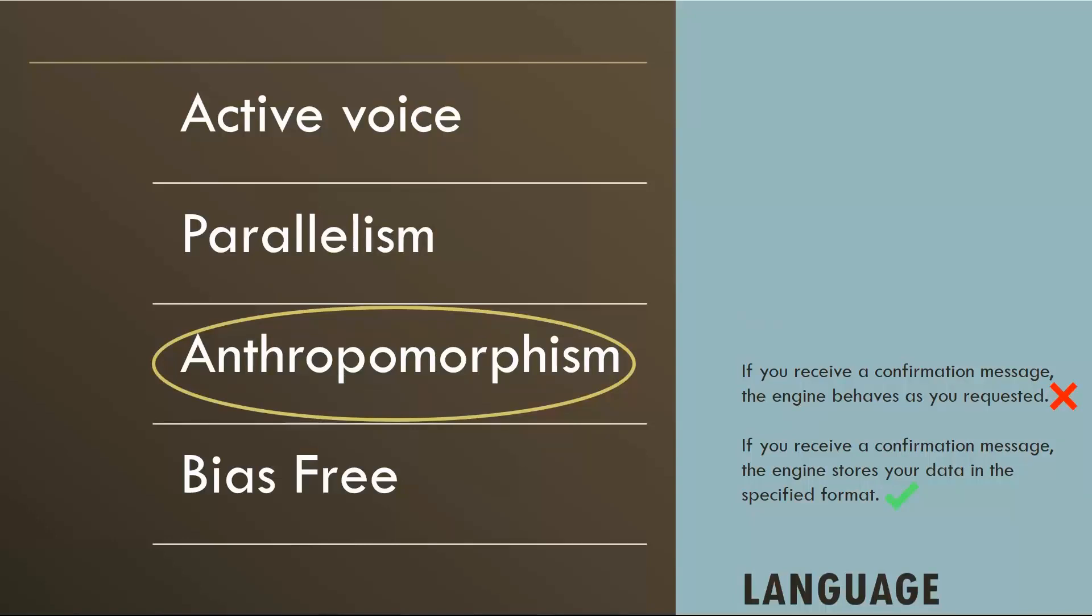Now, coming to the fourth parameter under language is bias-free. Yes, always make sure that your language is always free of bias. For example, gender. You must not be using language such as he must click on the save button. No, it does not work that way. It can be either the user or you can go with one. But, one must click on the submit button. Use the neutral language. Always be cautious about using bias language.